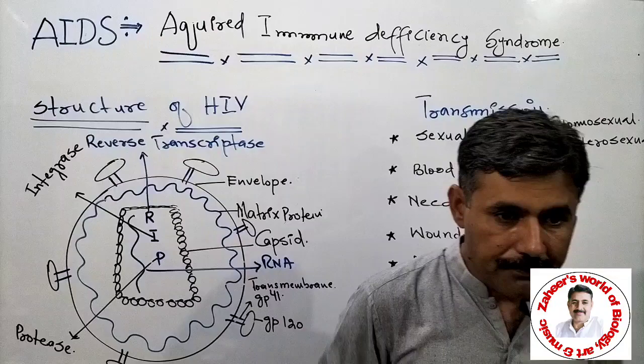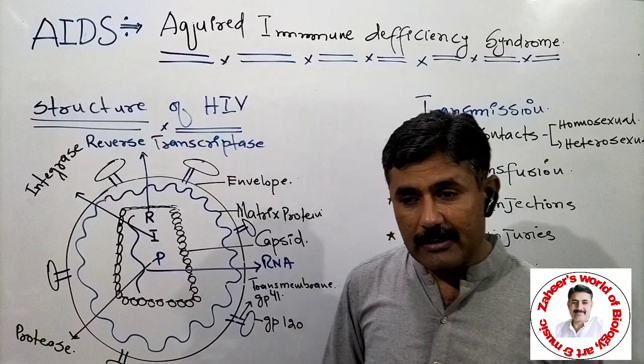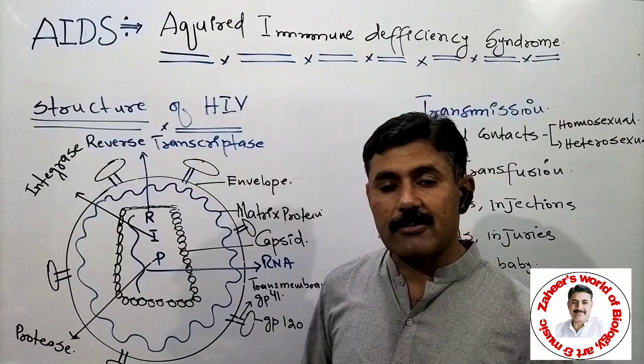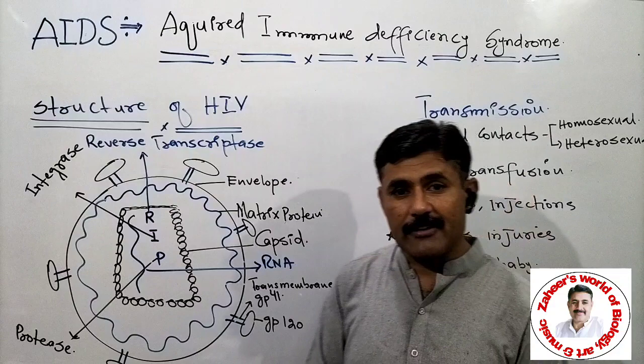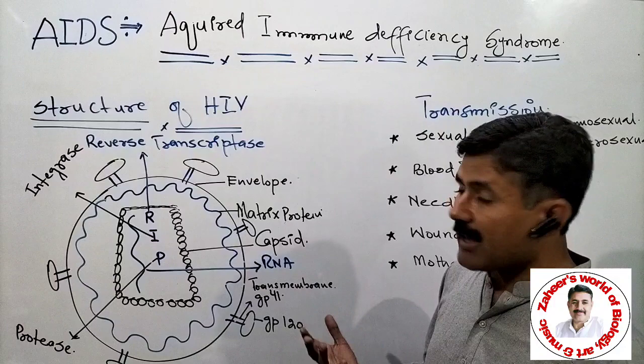AIDS is caused by a virus called Human Immunodeficiency Virus, or HIV. HIV infects our immune cells, and it especially has its effect on our T lymphocytes. T lymphocytes provide us a type of immunity called cell-mediated immunity. There are three types of T lymphocytes: TH lymphocytes, TC lymphocytes, and TS lymphocytes. These cells mediate with each other to provide cell-mediated immunity.